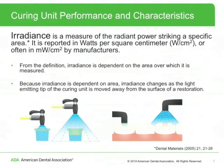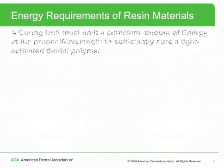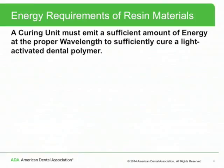However, as the curing tip is moved away from the restoration, less of the light strikes the restoration. In the illustration, we place the detector on top of the teeth to collect all of the light, and we remember that irradiance is power incident on a specific area. The measured irradiance will decrease as it is moved away from the surface of the tooth, because the power stays the same but the area that the power strikes becomes larger. A curing unit must emit a sufficient amount of energy at the proper wavelength to sufficiently cure a light-activated dental polymer.